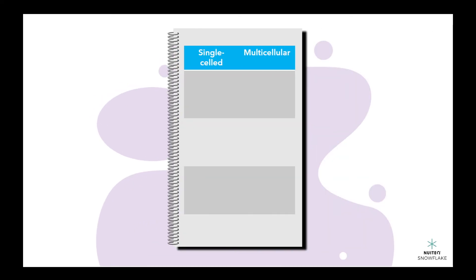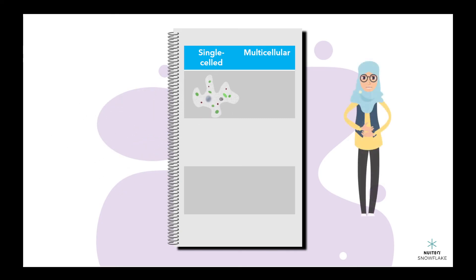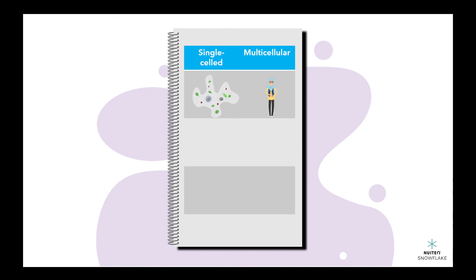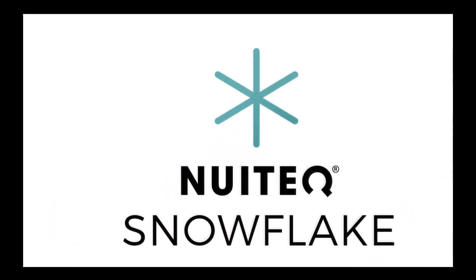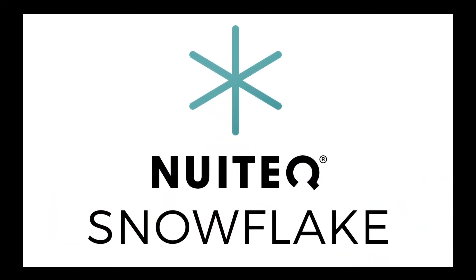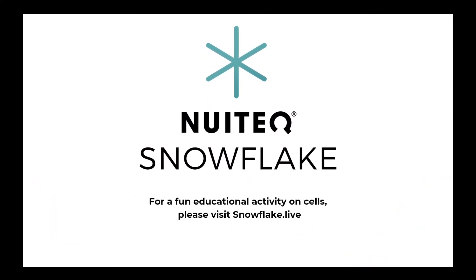You could also observe and classify different living things based on the number and type of cells they contain — for example, a single-celled organism like an amoeba and a multicellular organism like a human. Through different investigations, you will be able to see that cells make up living things and understand that cells are the basic unit of life.